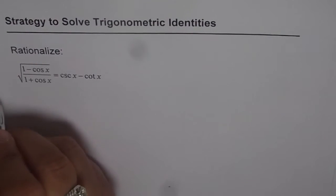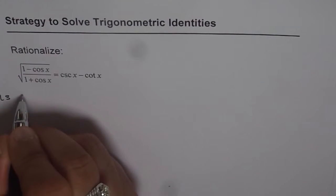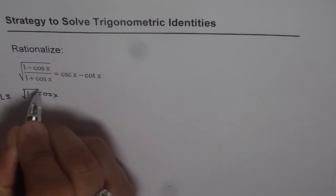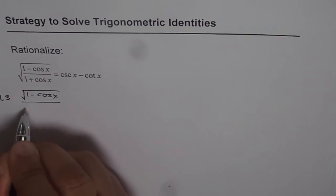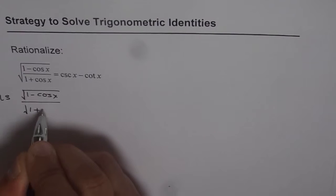Let's rationalize it. We start with the left side and write them separately as (1 minus cos x) over square root of (1 plus cos x).